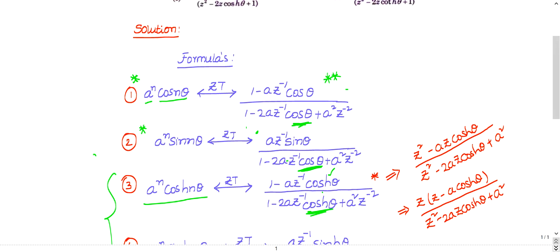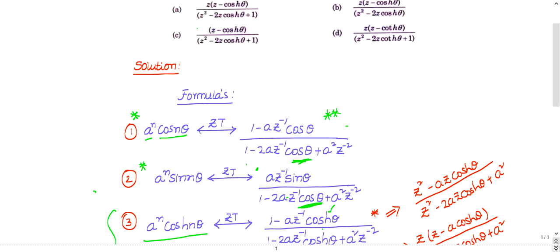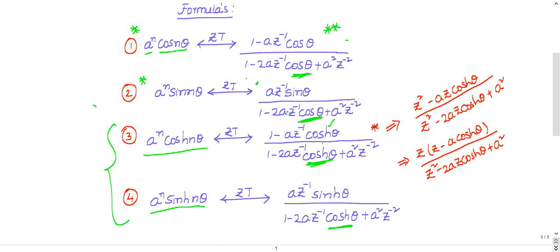In the question, the options are in terms of normal Z rather than Z-inverse. So what you need to do is multiply numerator and denominator by Z². Doing that gives: (Z² − a·Z·coshθ) divided by (Z² − 2a·Z·coshθ + a²), since Z² and Z⁻² cancel.